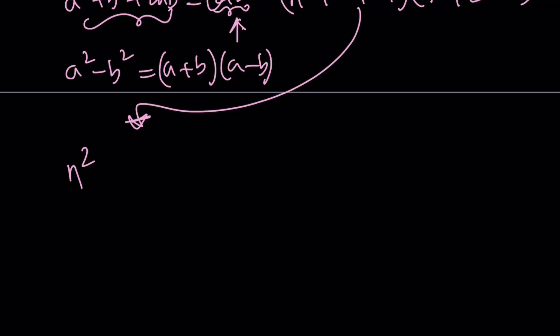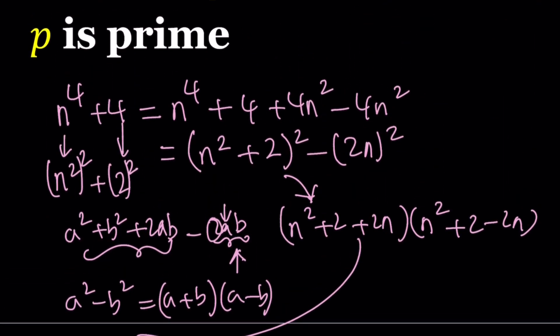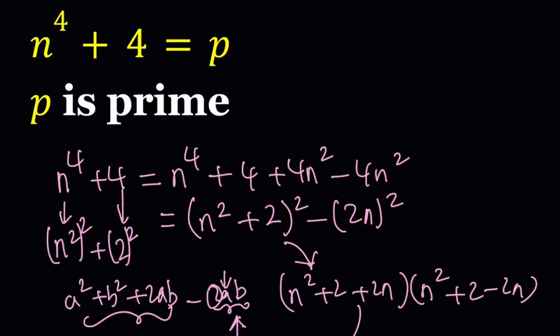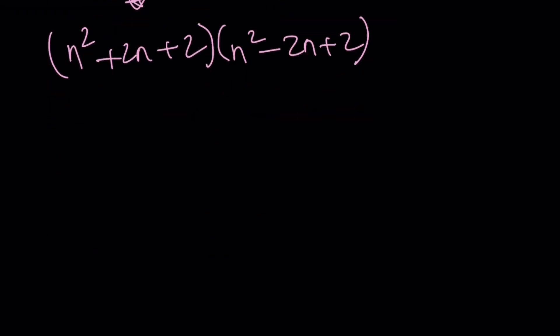But I want to write these in standard form, so let's go ahead and write them in standard form. n squared plus 2n plus 2, and n squared minus 2n plus 2. So these are two quadratic polynomials, which are factors of n to the fourth power plus 4.